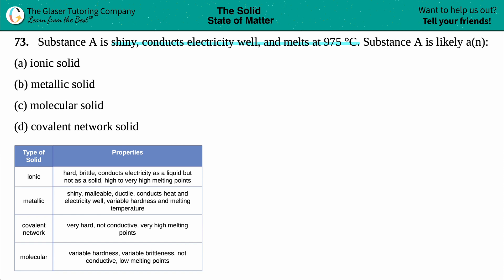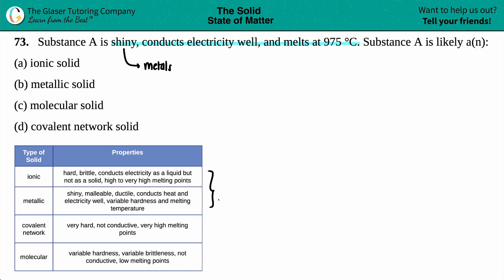Substance A is described as very shiny. If you think of substances that are very shiny, they tend to be metal-like. Shiny stuff is metals. So it's got to be a solid in the realm of metals, and there are two different types of crystalline solids that include metals: ionic or metallic.